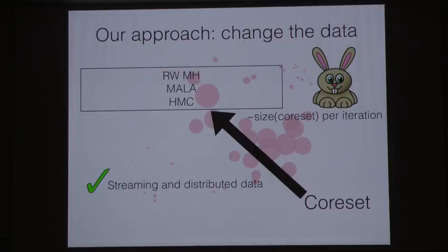Furthermore, to get the streaming distributed algorithms is quite simple. Basically, we rely on the following fact which is that if we have two datasets D1 and D2, a coreset for D1 combined with a coreset for D2, that's going to be a coreset for the combined datasets as well.